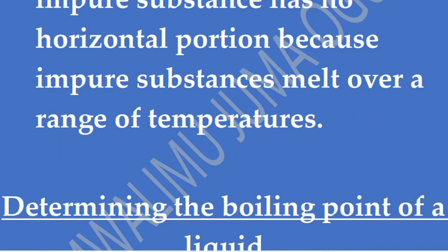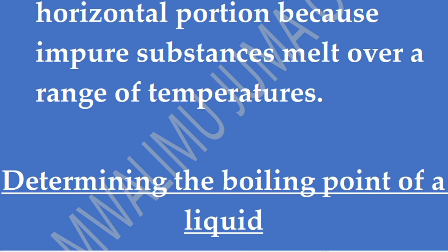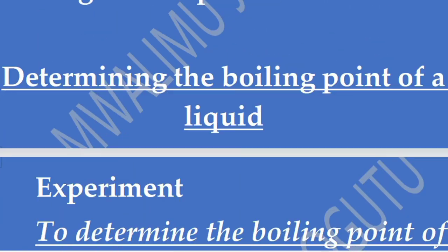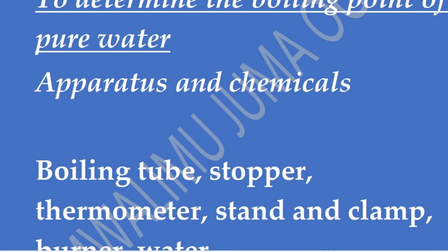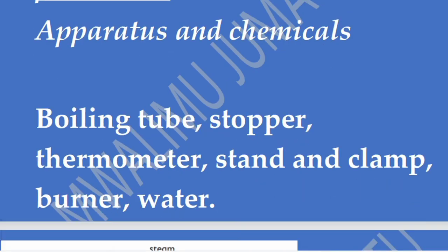Now we look at another experiment: determining the boiling point of a liquid. In the first case we looked at melting point; now we determine the boiling point. If a liquid like water boils at above 100 degrees, it tells us it has impurities. The apparatus required: a boiling tube, a stopper, a thermometer, a stand and clamp, a burner, and water. The clamp and stand hold the boiling tube containing water; the thermometer is inserted through a stopper into the water; then we begin heating.